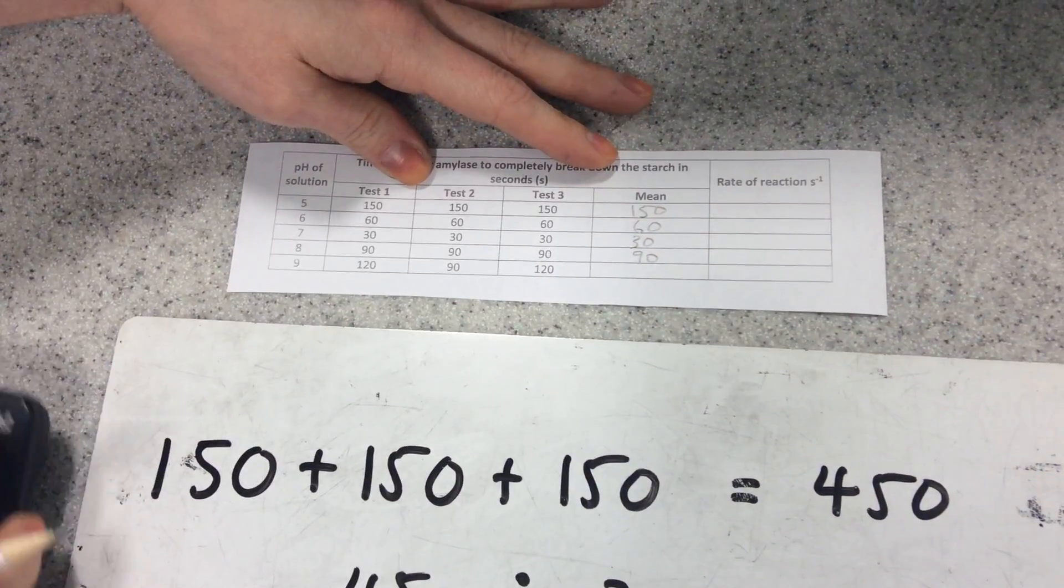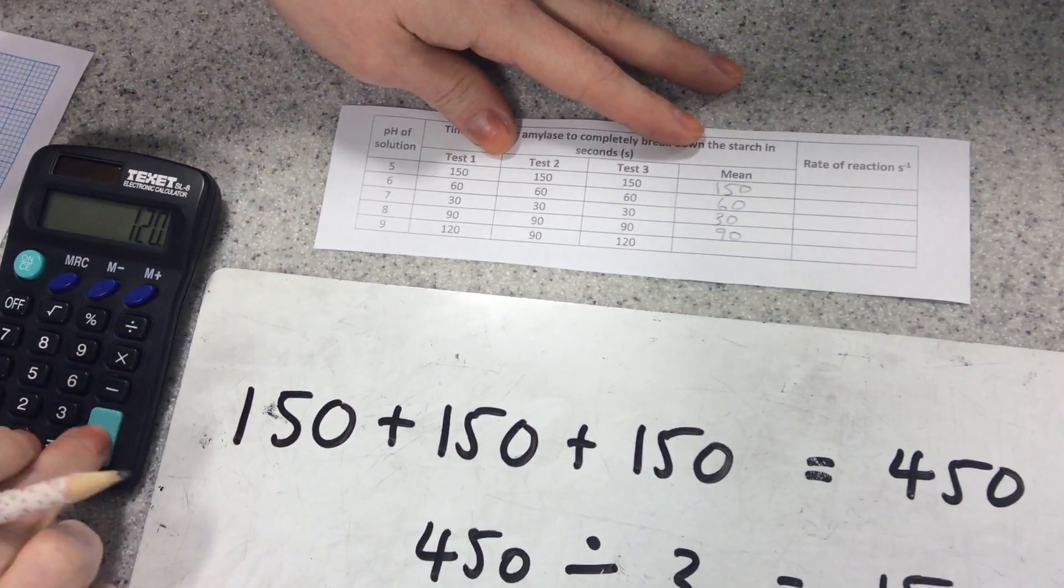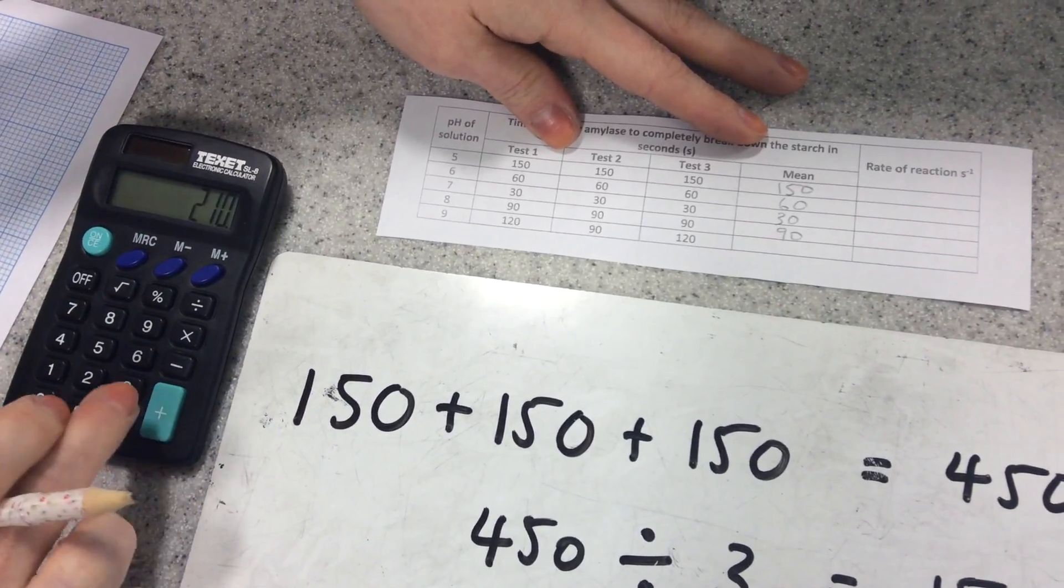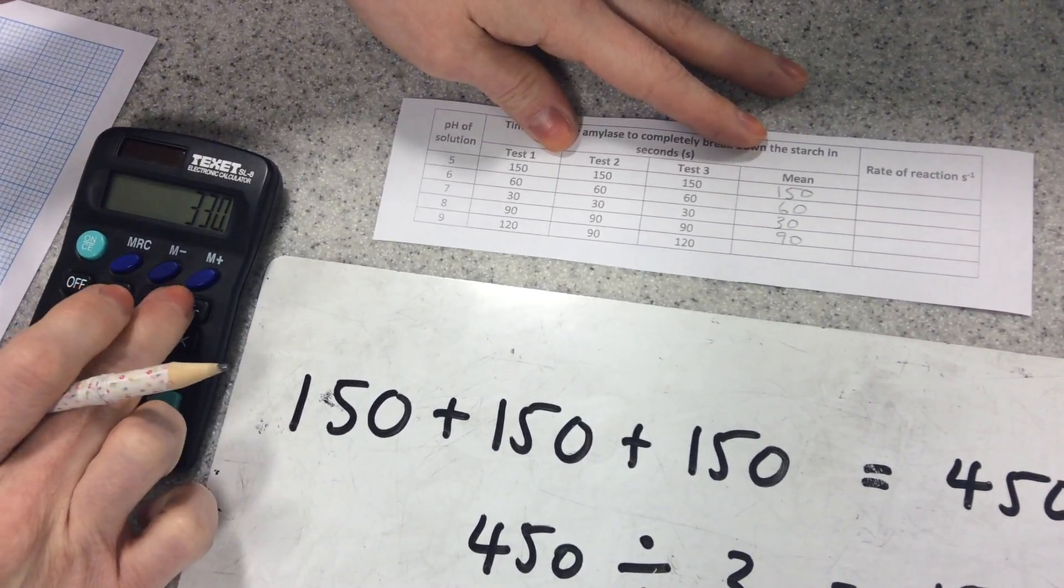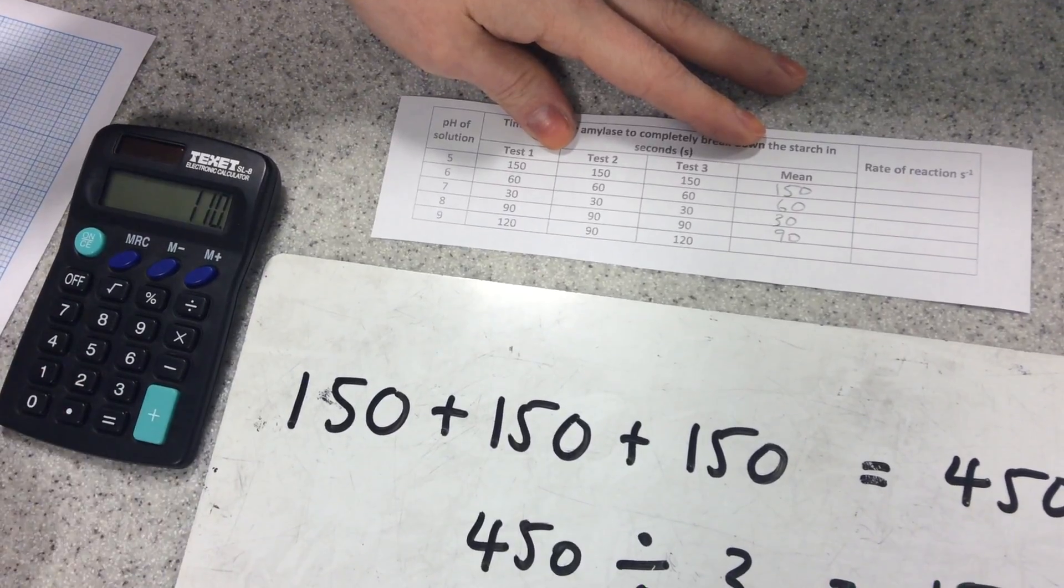and then my next one I can't do in my head, so I will do 120 plus 90 plus 120 equals 330 divided by three, gives me 110.